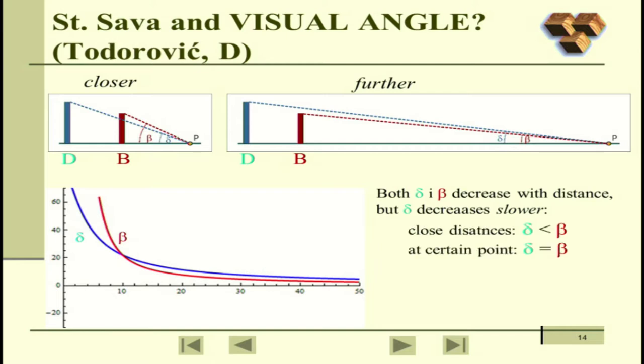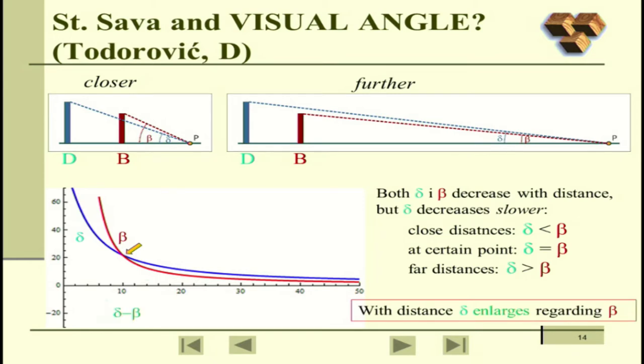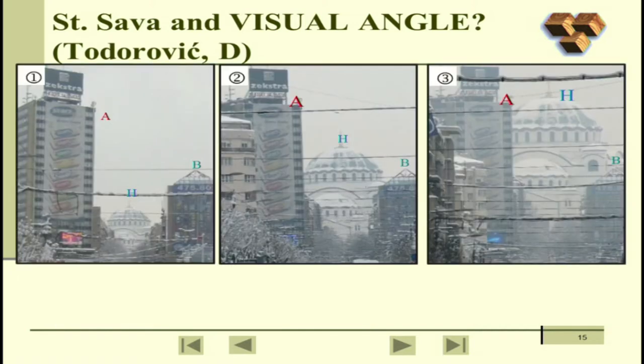So what happens? At certain points, those two angles are the same. You see the point when they are the same? But when you move further away, delta becomes even larger than beta. You see? Here in this part. Which means actually that the difference between two is increasing. Regarding beta, delta actually enlarges from time. Let me get you back to the photos. No more functions, I promise. Maybe a little bit more later.